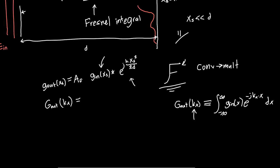So g_out of k_x is just equal to some new coefficient B_0, so we're going to have to normalize stuff. So this is going to turn into something weird. g_in of k_x times, and then if you take the Fourier transform of this function here, excluding the normalization constant, it's just e to the minus j d times k_x squared over 2k.